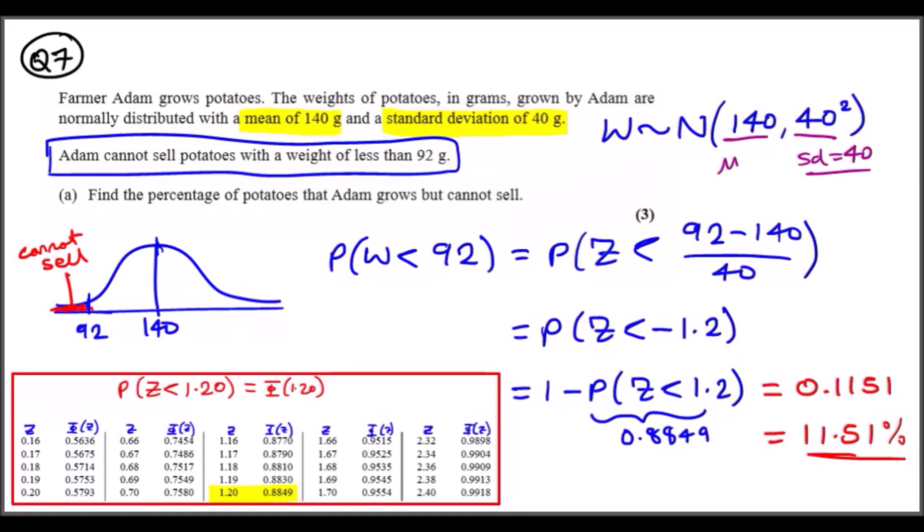Key things to note here. Next part is important: Adam cannot sell potatoes of a weight of less than 92 grams. This is vital. Always try and draw this out. Illustrate with a bell curve, put the mean of 140 in the middle (this has to be symmetrical) and put 92 on the left because this is all in ascending order. This is the area that is less than 92, where Adam cannot sell his potatoes.